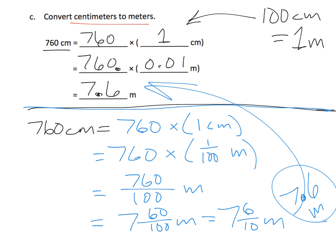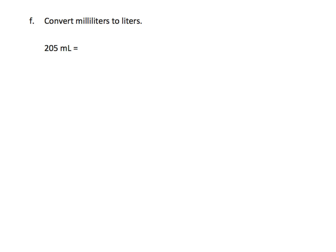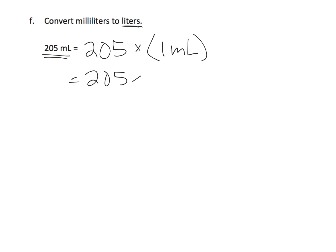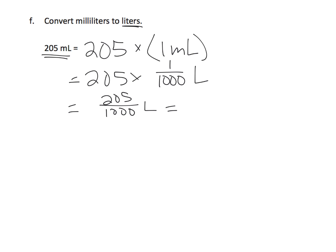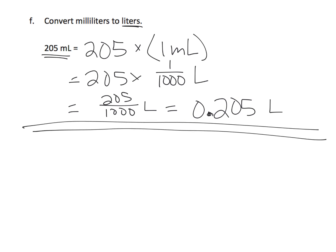I like fractions because students need practice with fractions, but parents and teachers, you have a choice. One more example: 205 milliliters converted to liters is 205 copies of one milliliter, which is 205 copies of one thousandth of a liter. Multiplying gives us 205 thousandths of a liter, and using our place value chart, we write that as 0.205 liters.